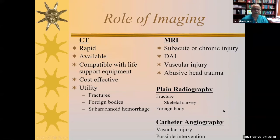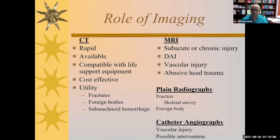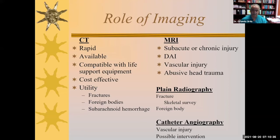What is the role of imaging in trauma? CT is the mainstay of evaluation because it's rapid, quickly done, and available. You can see fractures, foreign bodies, and areas of acute hemorrhage. MRI plays a complementary role, particularly when we suspect subtle shear stress injuries, vascular injuries, and in abusive head trauma victims. Plain radiography is still used — helpful for fractures, particularly as part of skeletal surveys in non-accidental trauma cases, and for foreign bodies. Catheter angiography has a role in confirming vascular injuries and for possible immediate intervention.